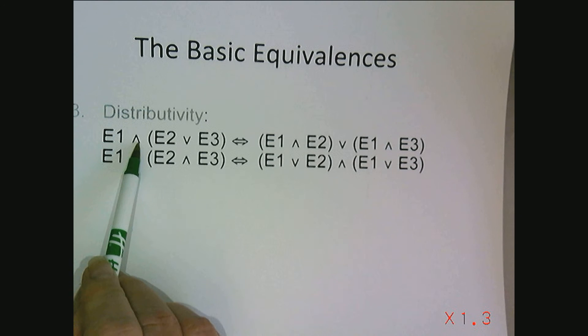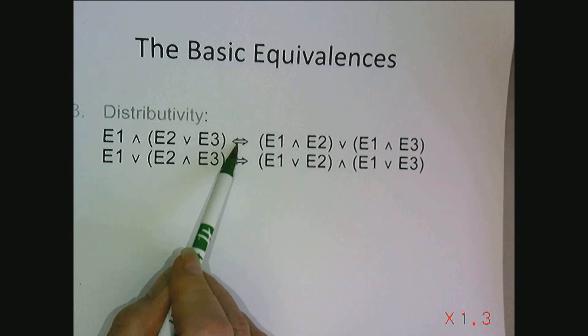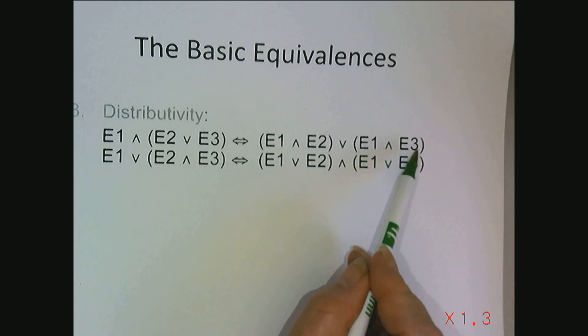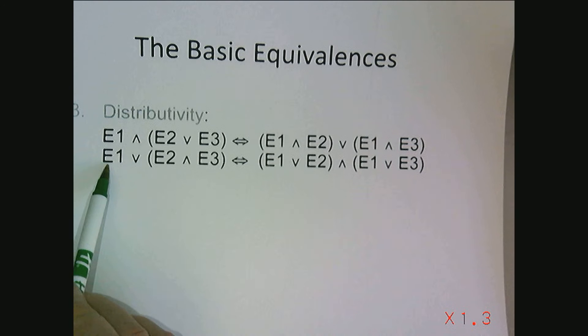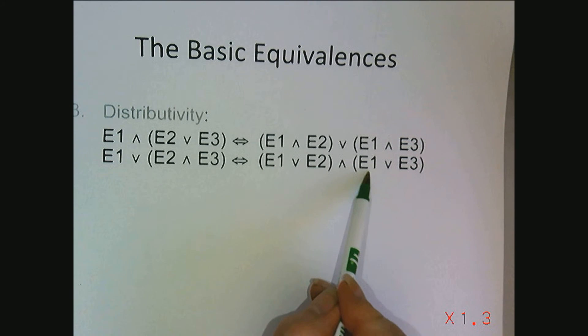Conjunction distributes over disjunction and disjunction distributes over conjunction. If we have E1 and the quantity E2 or E3, that's equivalent to E1 and E2 or E1 and E3.